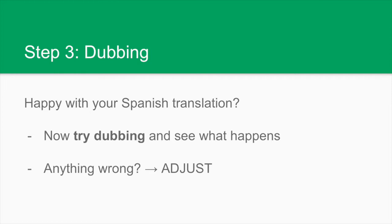To sum up, we should follow three simple steps: analyze the audiovisual material, produce a script and translate it if that is the task we have been set, and finally, once we are happy with it, try dubbing it ourselves. With this, we would double-check and correct any adjustment problems that may arise. Get ready, because there we go!